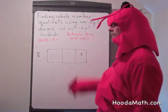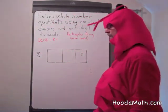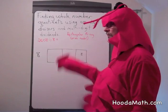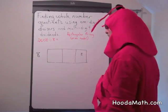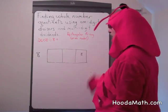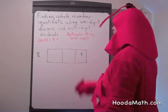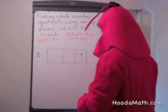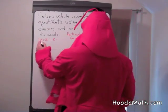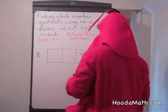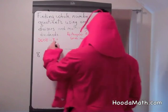We're going to divide a single digit into a four digit number using a rectangular array or area model. Now, we know 2,608 divided by 8.